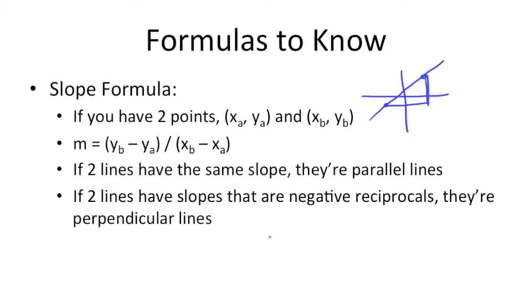By negative reciprocals, I mean if you have a slope of 3, the negative reciprocal would be negative 1 over 3. You would just take the number and turn it into a fraction. And vice versa, if you have 1/4 as a slope, the negative reciprocal would be negative 4, or 4 over 1.